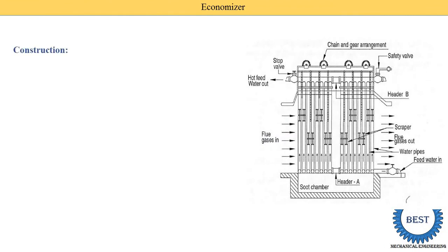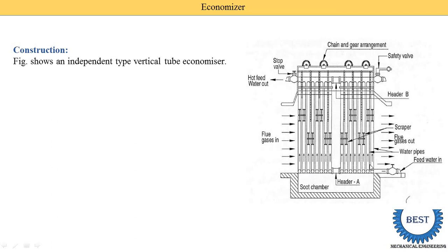This is the image of the independent type vertical tube economizer. There are a number of vertical tubes — tube one, two, three, four, five, six, seven, eight — and so on. That's why it is known as the independent type vertical tube economizer.